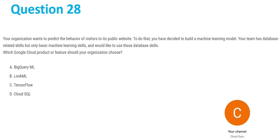Let's move on to question 28. Your organization wants to predict the behavior of visitors to its public website. To do that, you have decided to build a machine learning model. Your team has database related skills but only basic machine learning skills and would like to use those database skills. Which Google Cloud product or feature should your organization choose? The options are: A is BigQuery ML, B is LookML, C is TensorFlow, and D is Cloud SQL. Since it says machine learning model, we can clearly eliminate Cloud SQL as it is database related, so we'll eliminate option D.